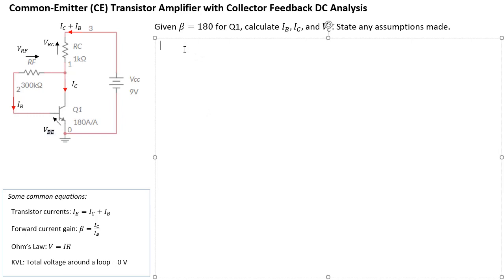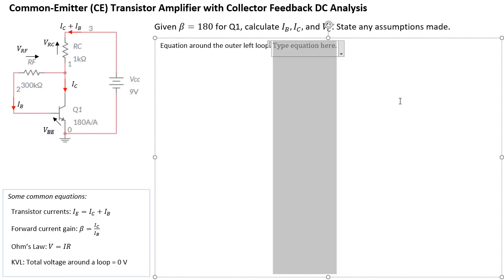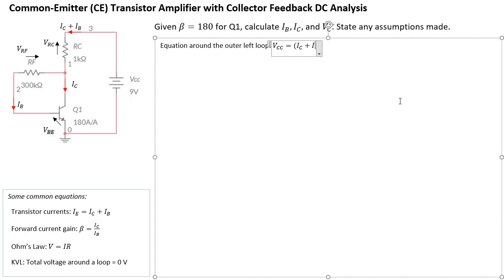The equation around the outer left loop — starting from VCC, going through RC, through RF, through the base-emitter junction, down to ground — gives us: VCC = (IC + IB)·RC + IB·RF + VBE. That's the voltage drop across RC using Ohm's law, plus the voltage drop across RF which is IB·RF, plus the base-emitter voltage VBE.